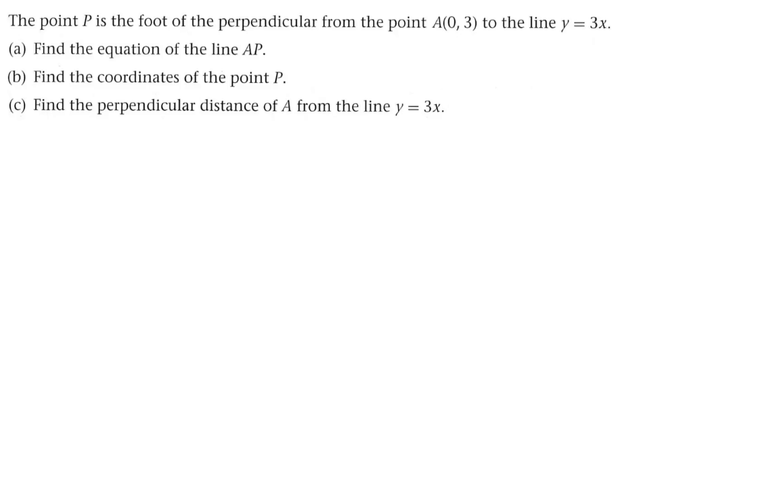Okay, so P is the foot of perpendicular from the point A to that line. So if I were to draw the line y equals 3x, goes something like that. And this is point A which is point (0,3). And the foot of perpendicular is this point here. That's right angles and that point there is P.